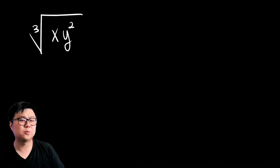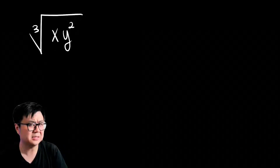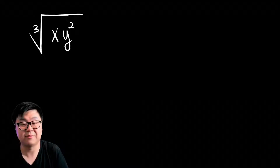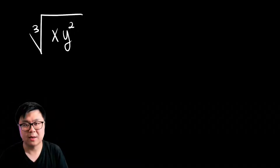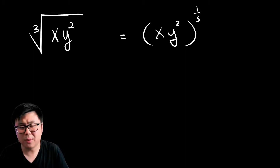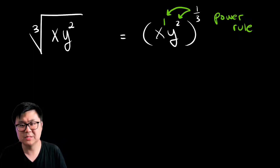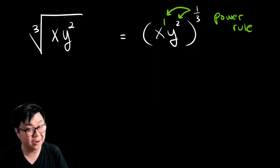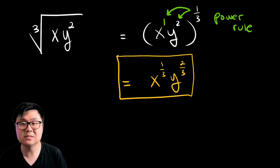Next up, we have the cube root of xy squared. What is our radicand? It would be the combination of xy squared. What's my index? That would be 3, so that's going to be the denominator of my fractional exponent. And the numerator? I don't see an exponent outside, so it's a 1. I can rewrite this as (xy²) all to the power of one-third. The brackets are important — they show that both xy squared is my radicand, not just x or just y squared. Now we distribute the exponent of one-third into x to the power of 1 and y to the power of 2, giving us x to the power of one-third times y to the power of two-thirds.